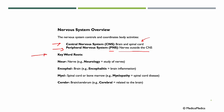Going back to medical terminology: we have 'neur,' meaning nerve, and if we add 'logi,' we have neurology — study of nerves or study of the nervous system. 'Encephal' means brain; if we add inflammation, meaning '-itis,' we have encephalitis — brain inflammation. 'Myel' means spinal cord or bone marrow, so if we say myelopathy, we mean spinal cord disease. 'Cerebr' means brain or cerebrum; if we say cerebral, we are talking about something related to the brain.